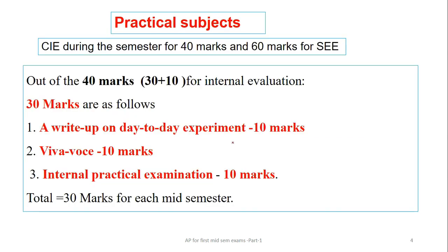When we come to the practical exam, internal marks will be 40 marks and external will be 60 marks, but in that internal 40 marks there is 30 plus 10. So 30 marks is for mid 1, mid 2 and another separate 10 marks will be for a presentation or mini project. So in this 30 marks, whatever we are going to have in first mid, day to day experiment write up, it carries 10 marks, that is nothing but your observation and record.